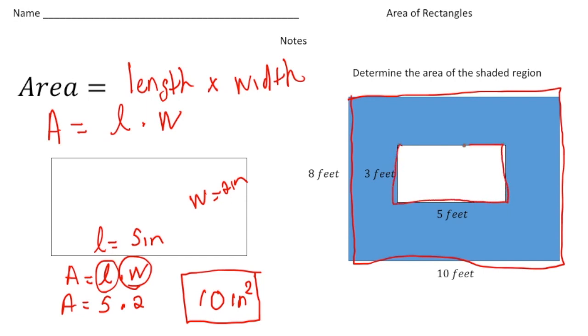And the way we're going to find the area of the blue region is we're going to find the big area of the rectangle and subtract the area of the smaller.